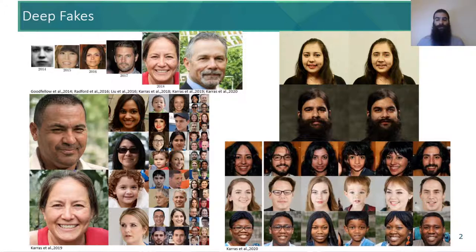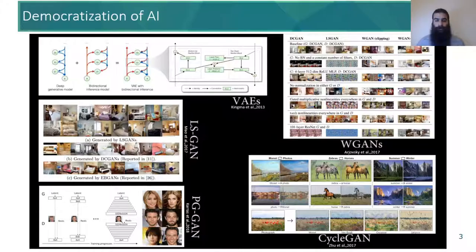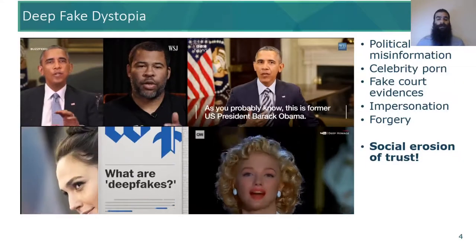Deepfakes succeeded in not only creating non-existing people, but also changing the age, pose, and race as seen on the bottom right, or swapping faces of us to Jason Momoa and Nicolas Cage as seen on the top right. Advancements in processing power and availability of generative approaches have reduced the required resources and skill level for realistic image manipulations, participating in the rise of the deepfake era.